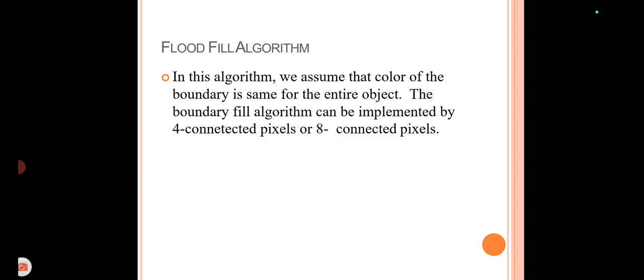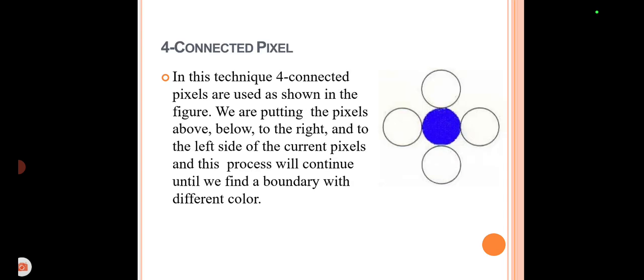In this algorithm, we assume the color of the boundary is the same for the entire object. The boundary fill algorithm can be implemented using either four-connected or eight-connected methods. In the four-connected approach, it colors all four neighbor pixels of the given pixel. As shown in the figure, the central pixel is colored blue, and it fills the polygon by coloring its neighbors: left, right, top, and bottom.